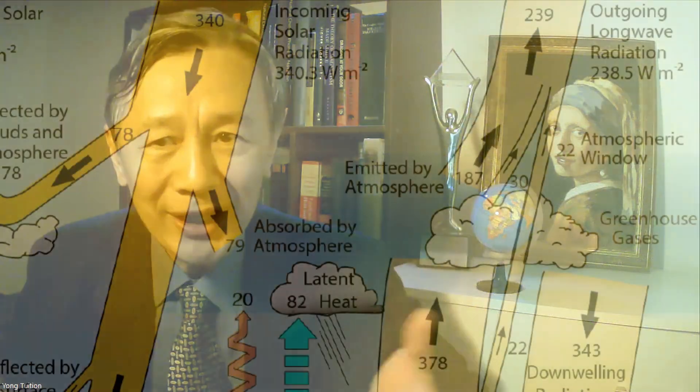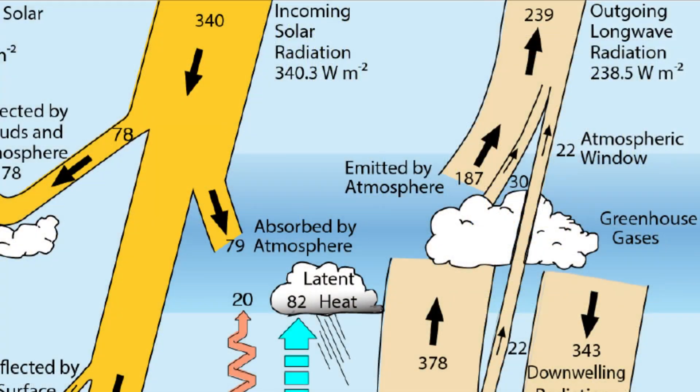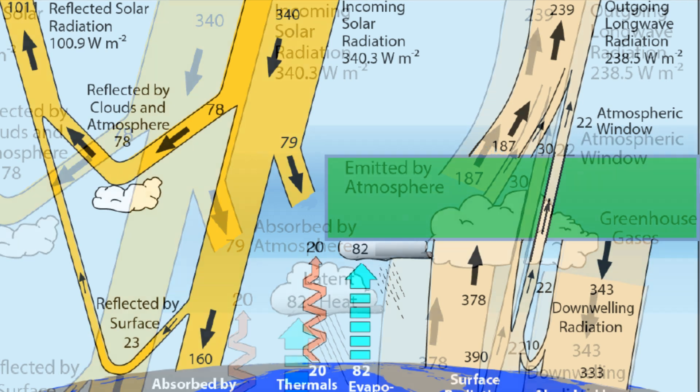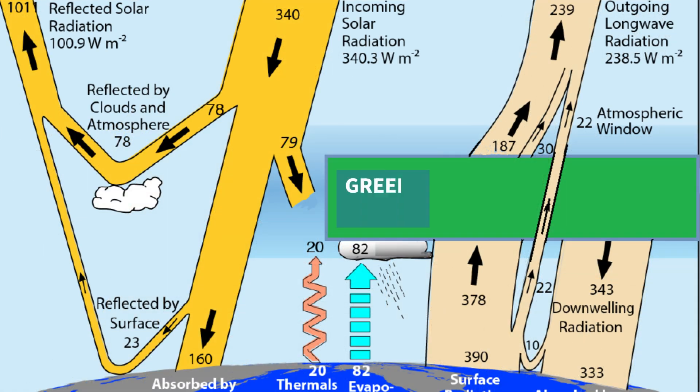But where is the greenhouse in this diagram? Trenberth didn't tell you. To facilitate my talk, I have added a green area to represent the greenhouse materials in his mind.